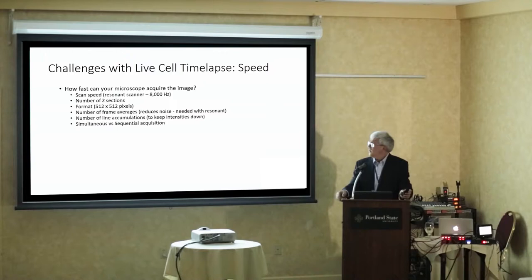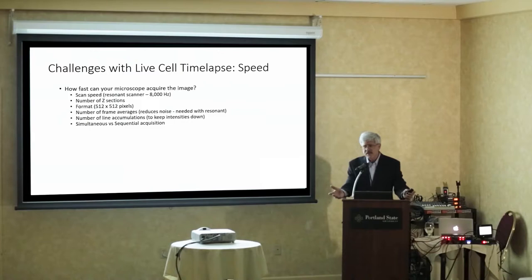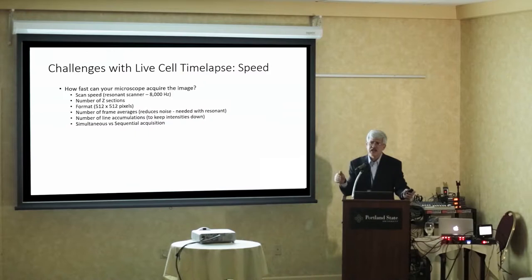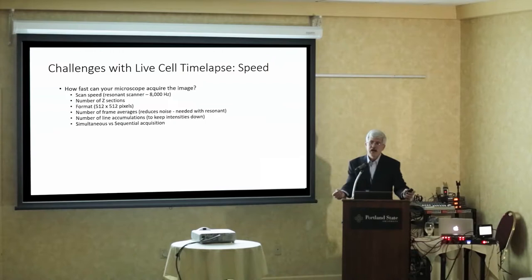Speed — how fast can you take your picture, and how fast do you need to? We have the speed of the scanner: a resonant scanner can go 8,000 Hz — that's 8,000 lines per second. Without a resonant scanner maybe the top is 1,000 or 1,400, while a good quality image might be at 700. So you're looking at 10 times faster using the resonant scanner. How many Z sections? If you do fewer, you can do it faster. Format: 512×512 takes half the time of 1024×1024. Number of frame averages reduces noise but takes longer.